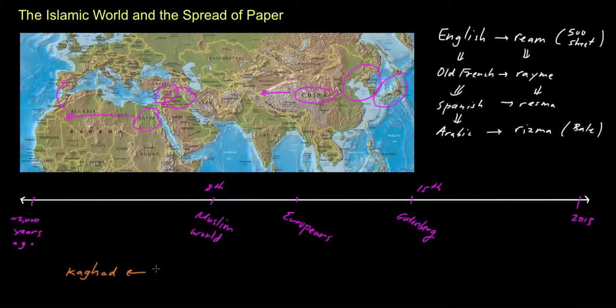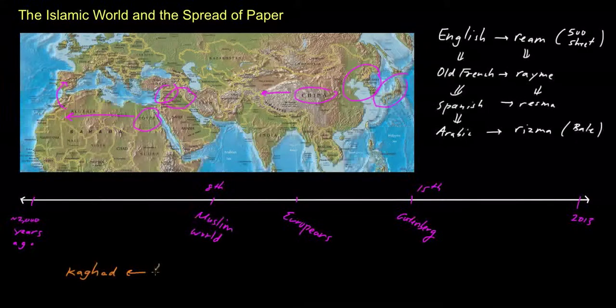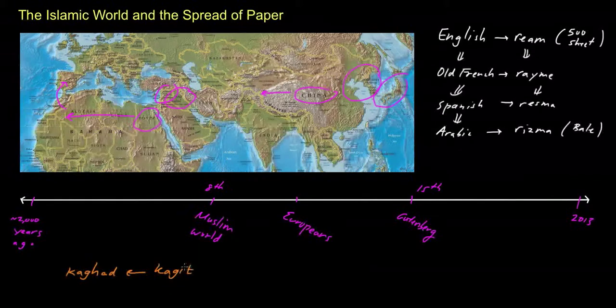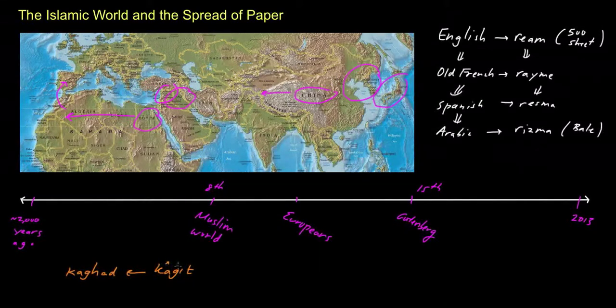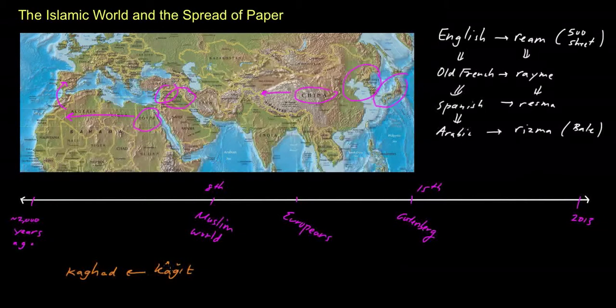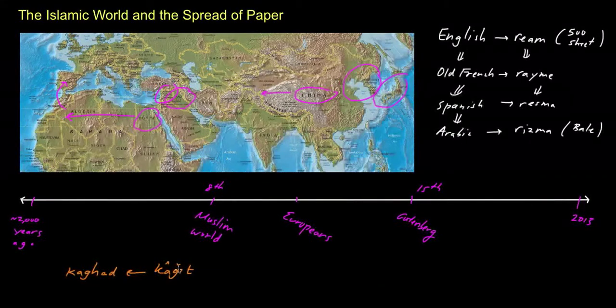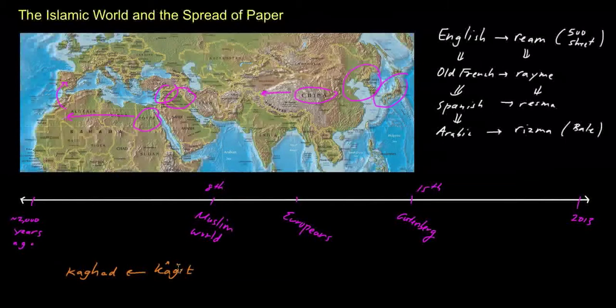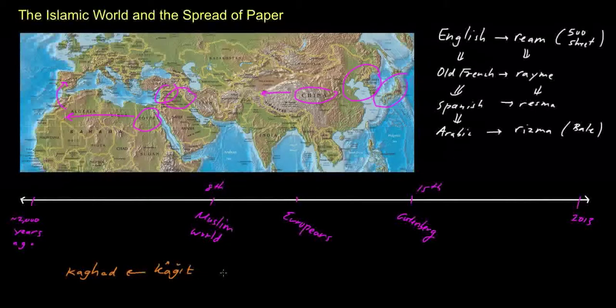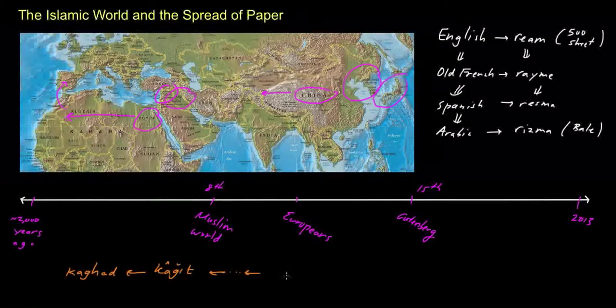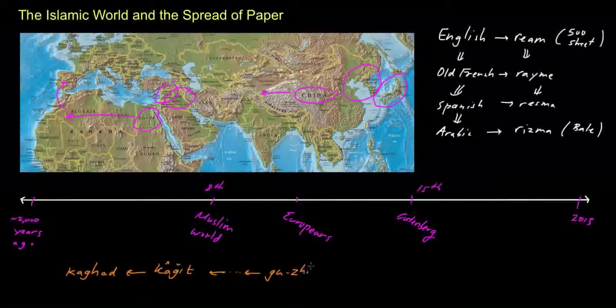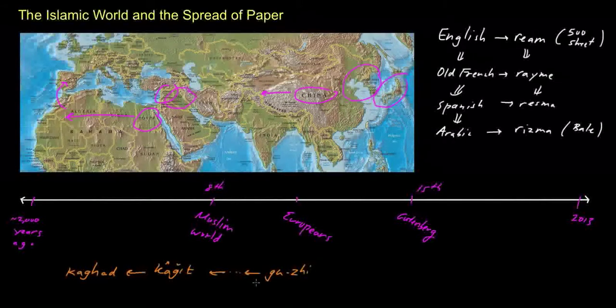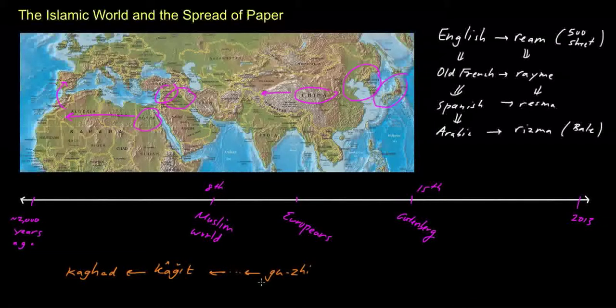And these words actually derive from words in Sogdian and actually Uyghur words. And these words, in turn, derive from the word, and there's many chains of derivations here, but these words, in turn, derive from the Chinese word guzi. And guzi actually stands for paper, and specifically, it was paper that was made from the paper mulberry bark.